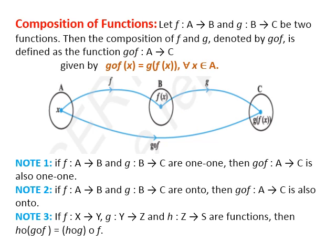We are starting with the first topic: composition of functions. Let f from A to B and g from B to C be two functions. Then the composition of f and g is denoted by gof, defined as gof from A to C. We have f from A to B, g from B to C, and the composition gof is from A to C — that is, first to third set. It is given by gof(x) = g(f(x)) for every x belonging to A, meaning none of the elements of the first set A should be unpaired.